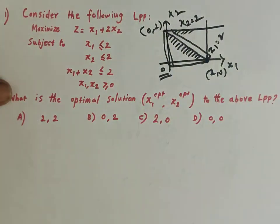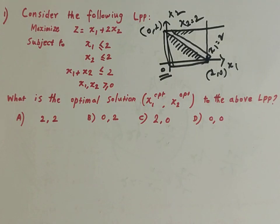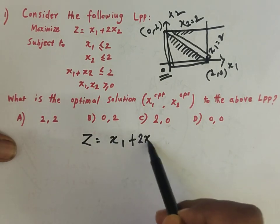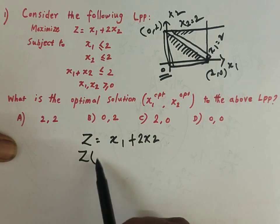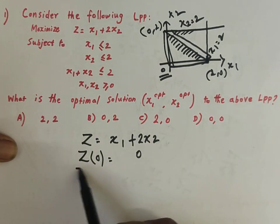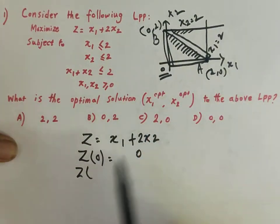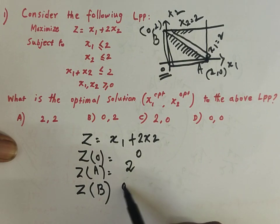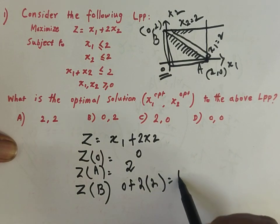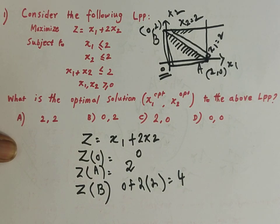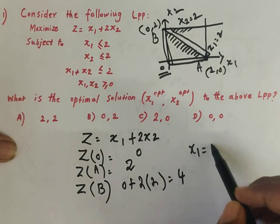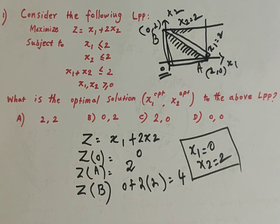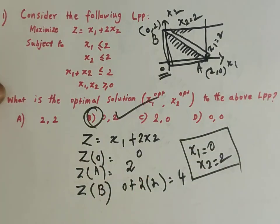The corner points are (0,0), (2,0), and (0,2). Evaluating the objective function z = x1 + 2x2 at each corner: at origin (0,0) z = 0; at point A = (2,0) z = 2; at point B = (0,2) z = 0 + 2×2 = 4. So the optimal solution is x1 = 0, x2 = 2, giving maximum z = 4. Answer: option B.